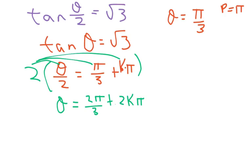Now, when k is 0, we get 2 pi over 3. So that's one solution. Let's see if we get any more. Let's try k equals 1.